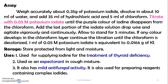Assay: Weigh accurately about 0.35 gram of potassium iodide. Dissolve in about 10 ml of water and add 35 ml of hydrochloric acid and 5 ml of chloroform. Titrate with 0.05 mol potassium iodate until the purple color of iodine disappears from the chloroform layer. Add the last portion of iodate solution dropwise and agitate vigorously. Allow to stand for 5 minutes. If any color develops in the chloroform layer, continue the titration until the chloroform decolorizes. 1 ml of 0.05 mol potassium iodate is equivalent to 0.0166 gram of potassium iodide.